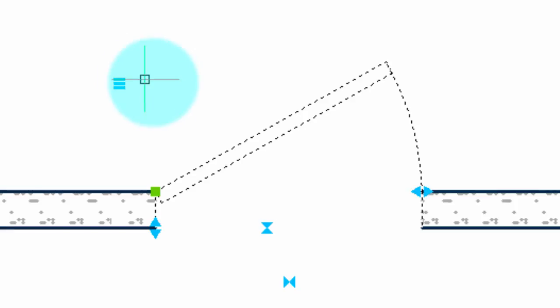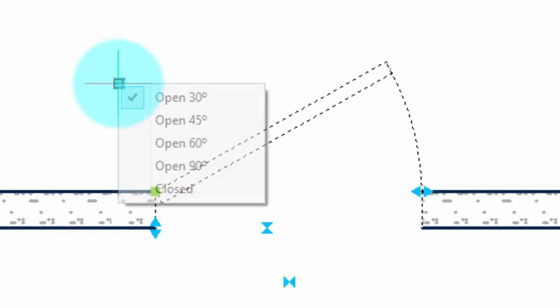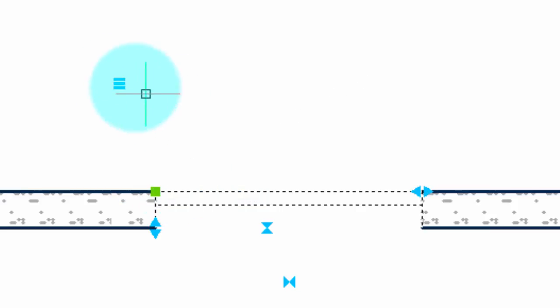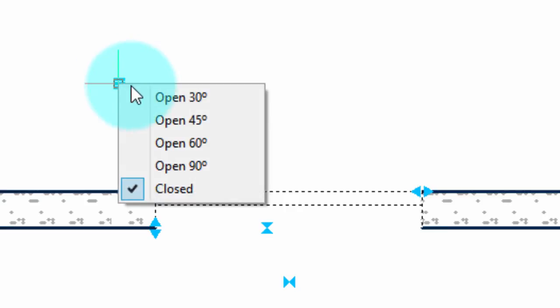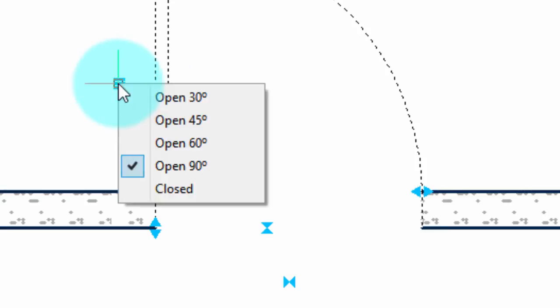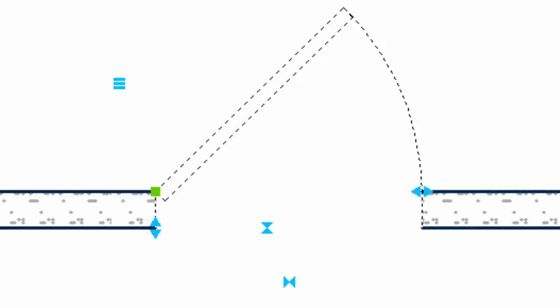Now the other grip in here looks like a stack of pancakes — you might be familiar with that from Android, which uses a similar pancake icon for options. Let's click it and see what happens. It's allowing us to select different types of openings. Right now it's at 30 degrees. We can close the door or we can open it all the way up or somewhere in between — it's your choice.